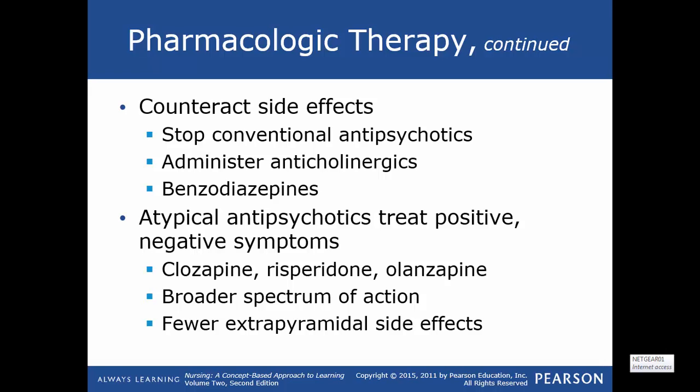In 1989, atypical antipsychotics were developed to treat both positive and negative symptoms. These include clozapine, risperidone, and olanzapine. They have a broader spectrum of action. Main benefits are fewer extrapyramidal side effects, improved mental functioning, and reduced depression, hostility, and suicidal risk.